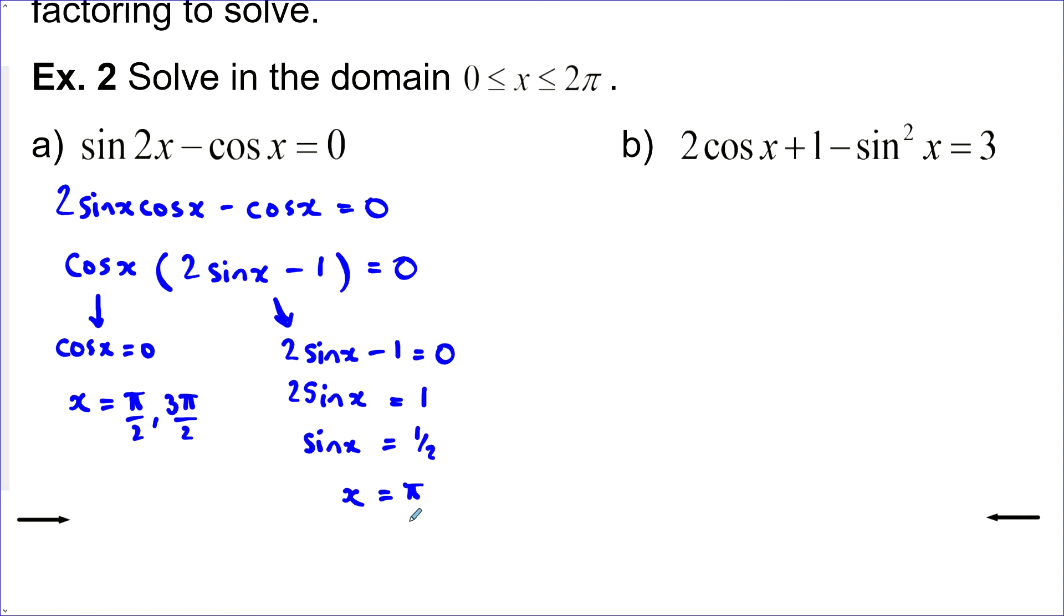So we've got pi over 6 in quadrant 1 and 5 pi over 6 in quadrant 2. So putting together our four answers here, that's what we have.